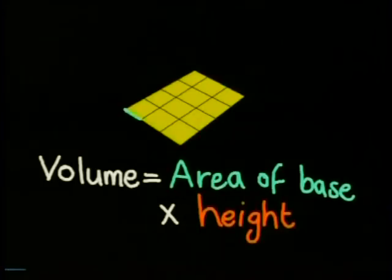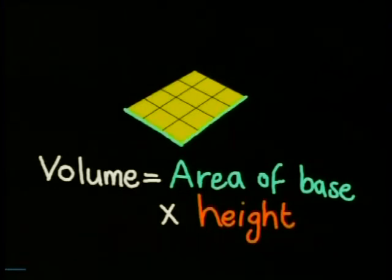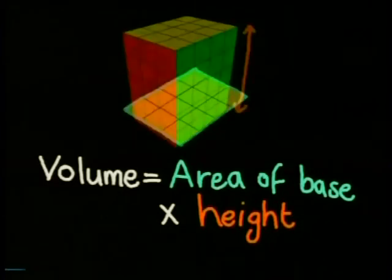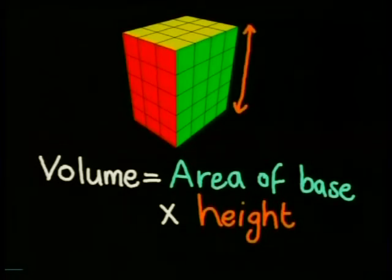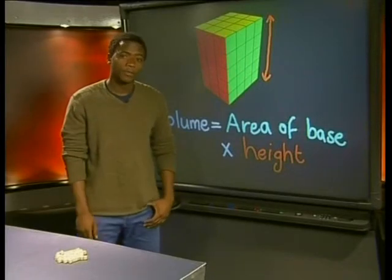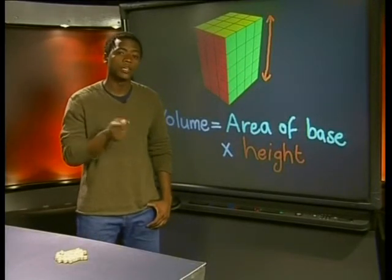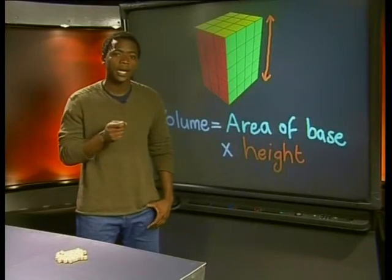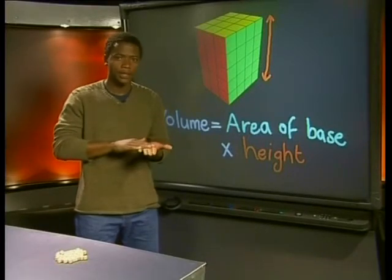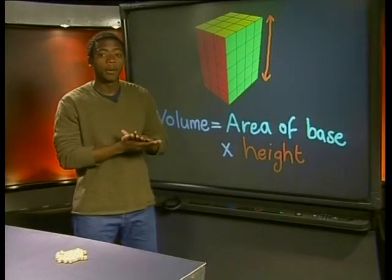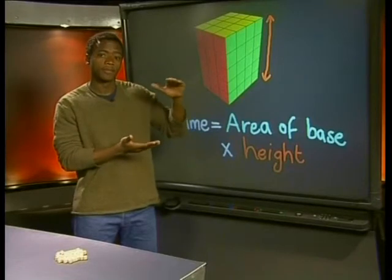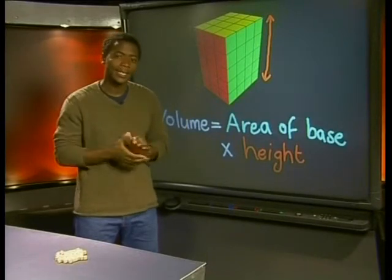In other words, another way to find the volume of a right rectangular prism is to multiply the area of the base by the height. You could always find the volume of a right rectangular prism by multiplying the area of the base by the number of layers on top of it, which is the height.